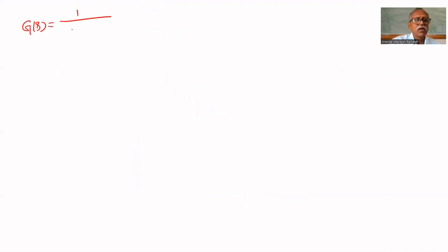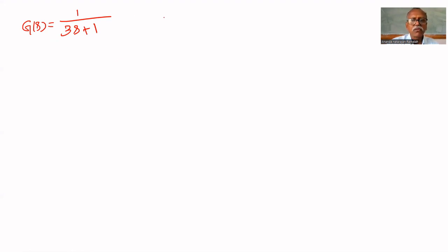Let us design a controller for G(s) = 1/(3s+1). Here, dead time equals 0. Therefore, we will design Dahlin's controller for this.